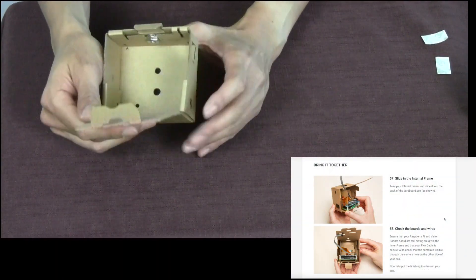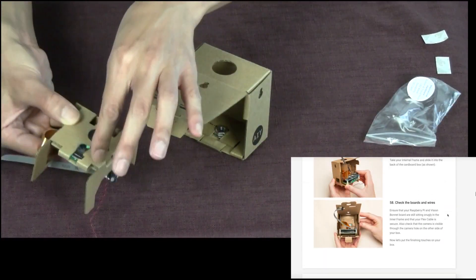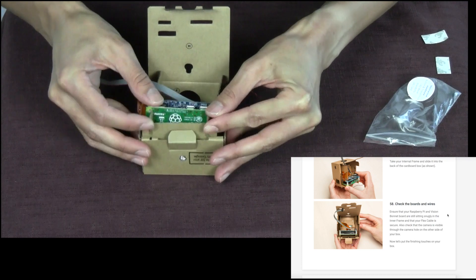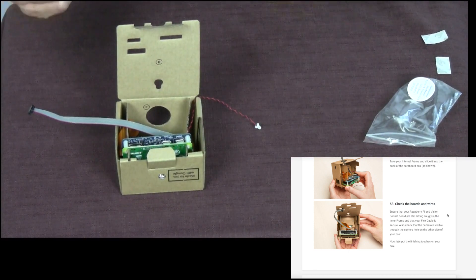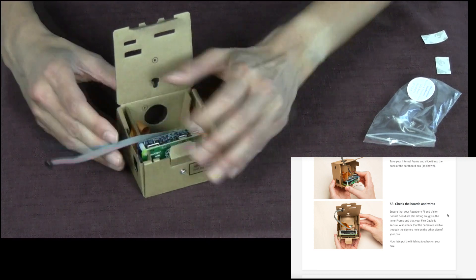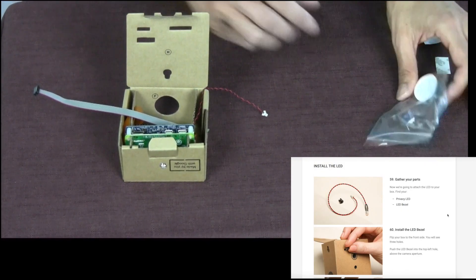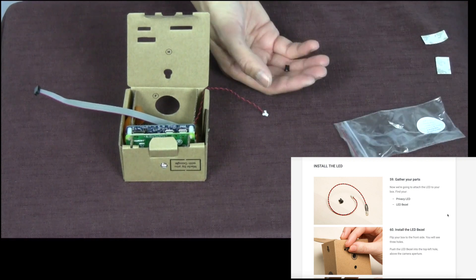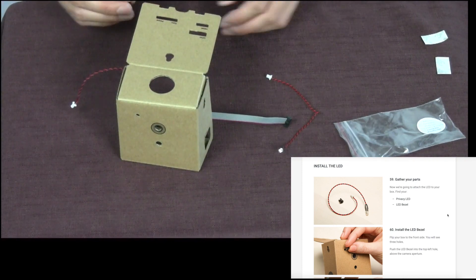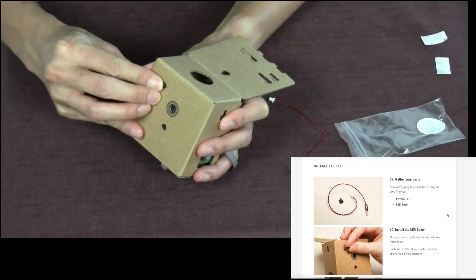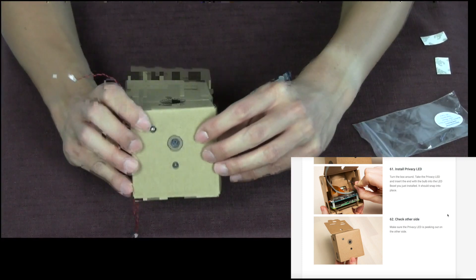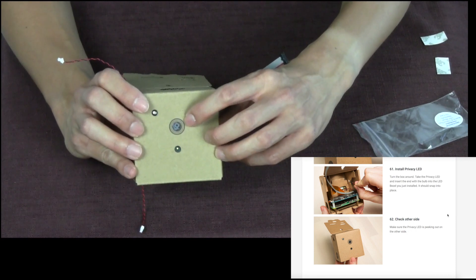Now we'll slide in the internal frame, but I'm just going to go ahead and remove the adhesive from the camera. I've slid the internal frame into the cardboard box. Check the boards and the wires. Ensure the Raspberry Pi and the Vision Bonnet are still sitting snugly in the inner frame and that everything is still attached. There is a privacy LED and an LED bezel. So flip your box to the front side and push the LED bezel into the top left hole. Install the privacy LED from the back there. Now there's the privacy LED right here and here is the vision camera.